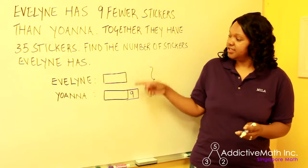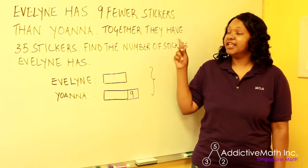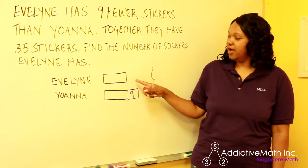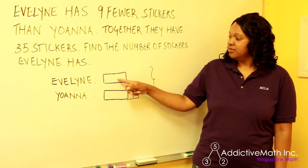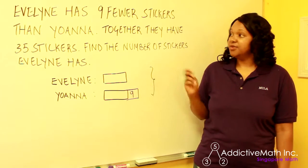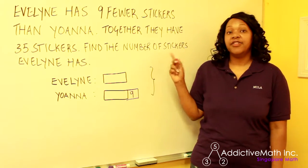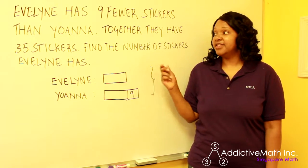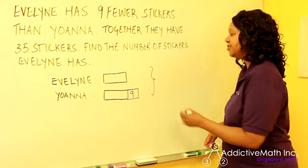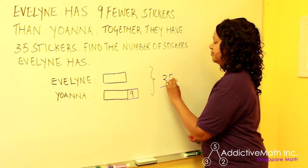Let's see — does this represent what the first sentence says? Evelyn has nine fewer stickers than Johanna. Yes, that's what it represents. Now together they have 35 stickers. That's our total, so we will put that over here.